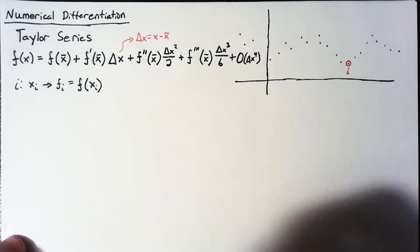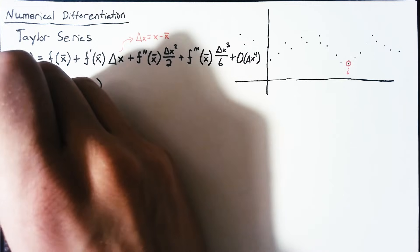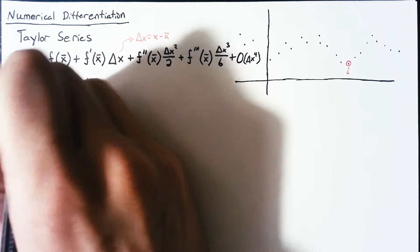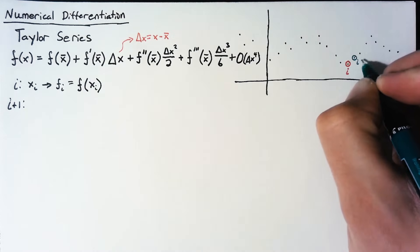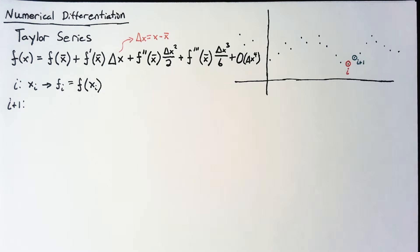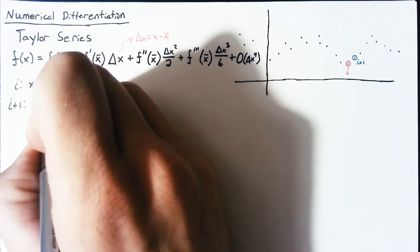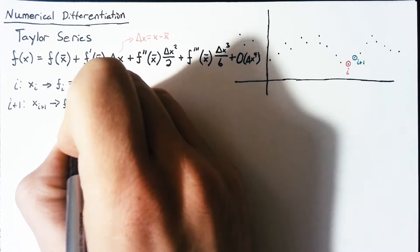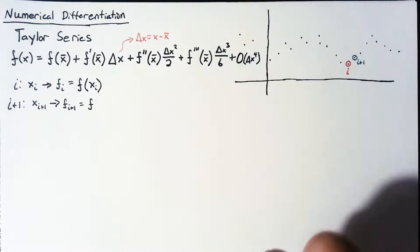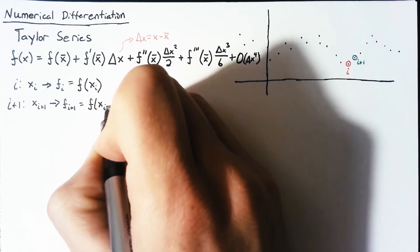And we can do this for other points as well. So let's say that we go one point to the right and start talking about i plus 1. This point right here is going to be i plus 1. And we're just going to name those values x sub i plus 1, which yields f sub i plus 1, which again is just the evaluation of this unknown function at x sub i plus 1.